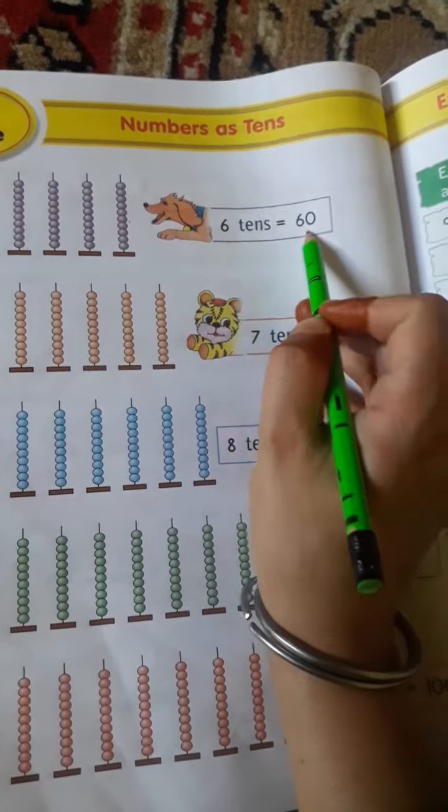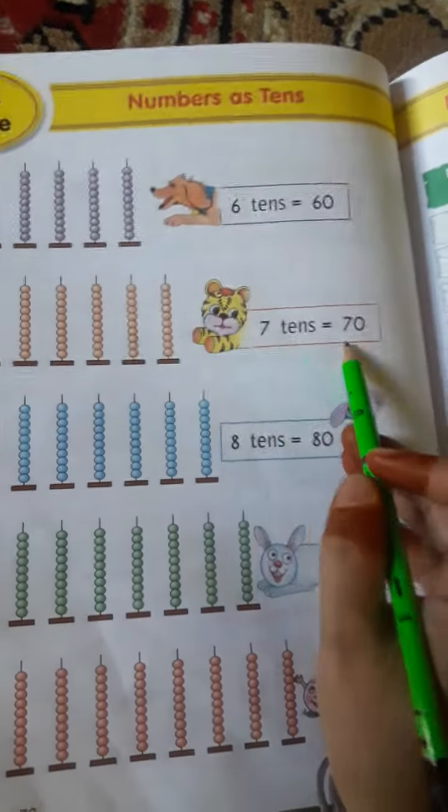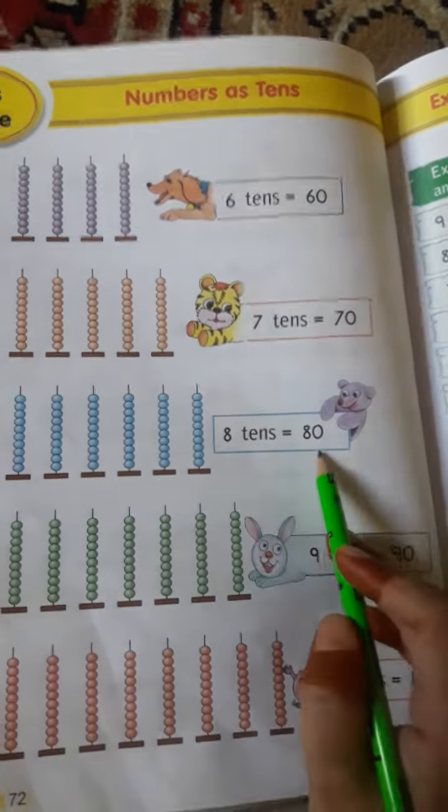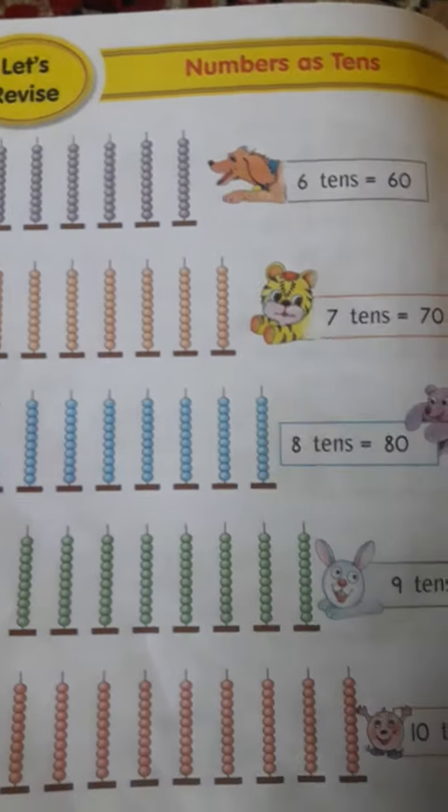7 tens means 70, 8 tens means 80. This is the place of tens.